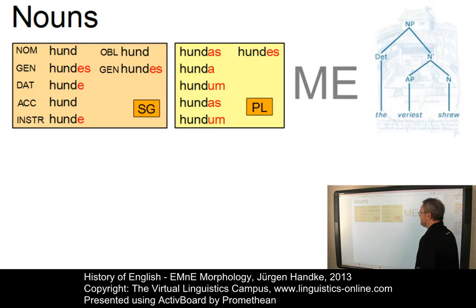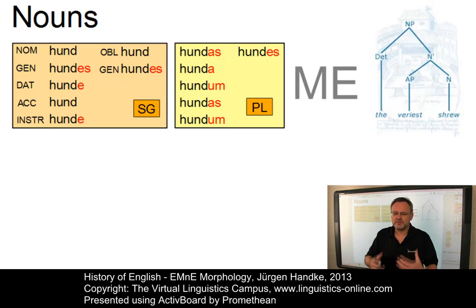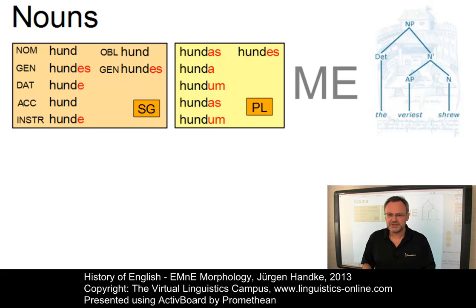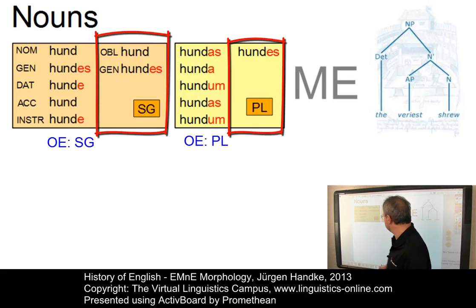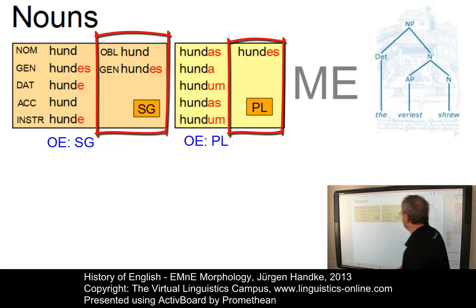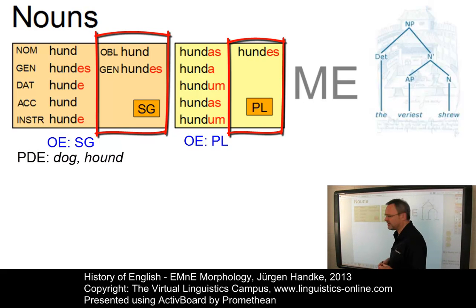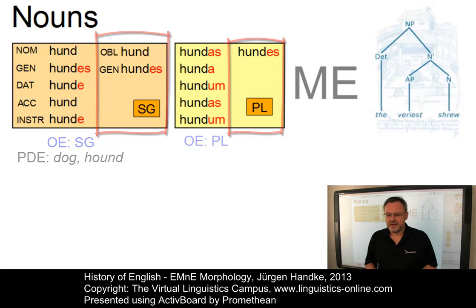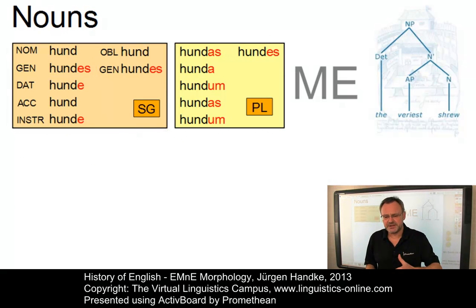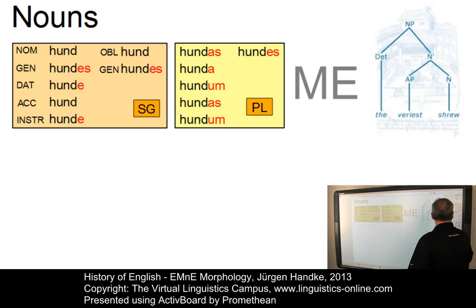In looking at nouns, we can find that essentially, noun morphology of early modern English was the same as that of present-day English, and it inherited all aspects from Middle English. As you can see here, this is the inflectional paradigm of the Middle English noun, hund — present-day English dog or hound. There were two cases in Middle English, and so there were in early modern English, just like in present-day English.